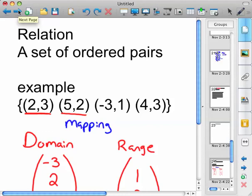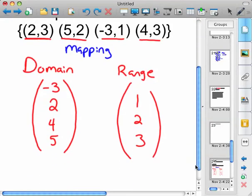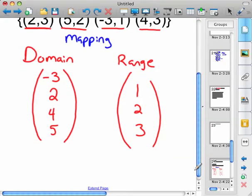If you have an input of five, your domain's five, your range is two. If you have an input of negative three, your output's one. And if you have an input of four, you have an output of three. So let's look at what this is as a mapping.